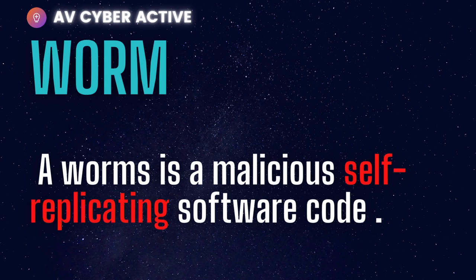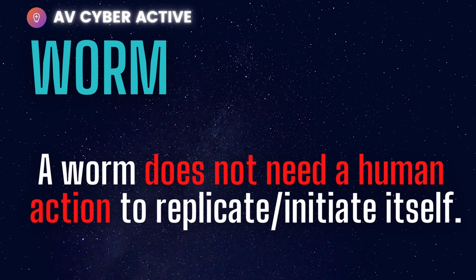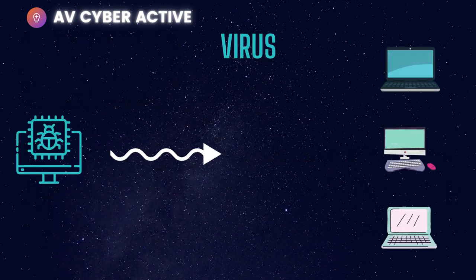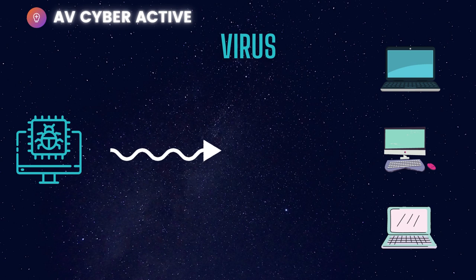Next, what's a worm? A worm is a malicious software that is self-replicating. A worm does not need human interaction to replicate or initiate itself. Worms and viruses are very similar in that they self-replicate and execute a malicious payload on a computer system.